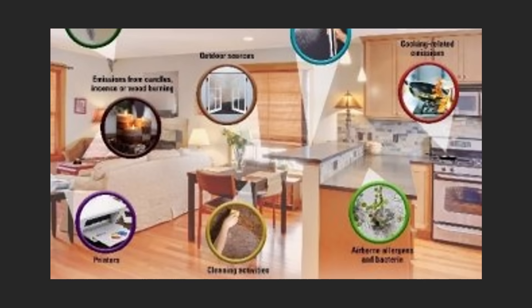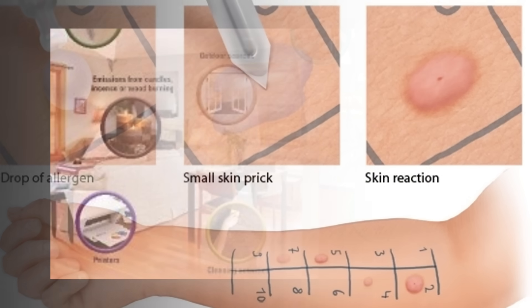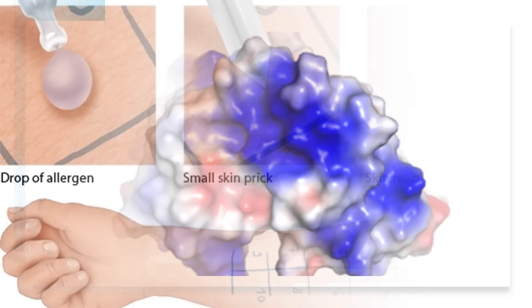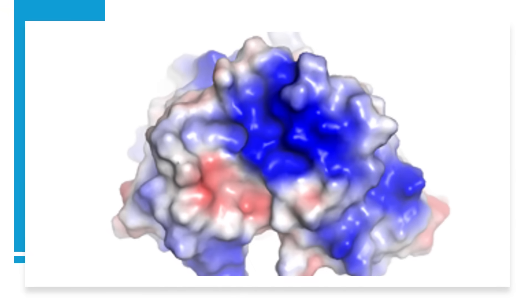An immune system overreaction develops until the release of histamine. Reactions occur when antibodies detect dust and other threats, and the immune system responds after detection. Chemicals and proteins released during the reaction control and mitigate the perceived issue. A cough and a runny nose are reactions to the histamine release. Reactions to histamine and other chemicals range from mild to severe.